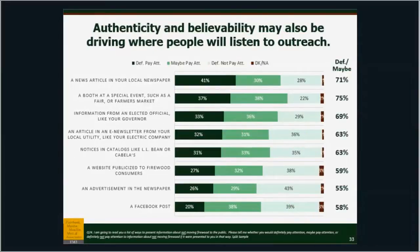Going down the line of different places where people get information, we see some interesting problems. A news article seems genuine. But an advertisement in the newspaper shows a fairly significant drop in people stating they'll listen to it. A booth at a farmer's market is a strategy my program has taken through years of outreach — people do respect that one — but it's a lot less effective than some of the more on-site, at-the-moment-of-camping type outreach.